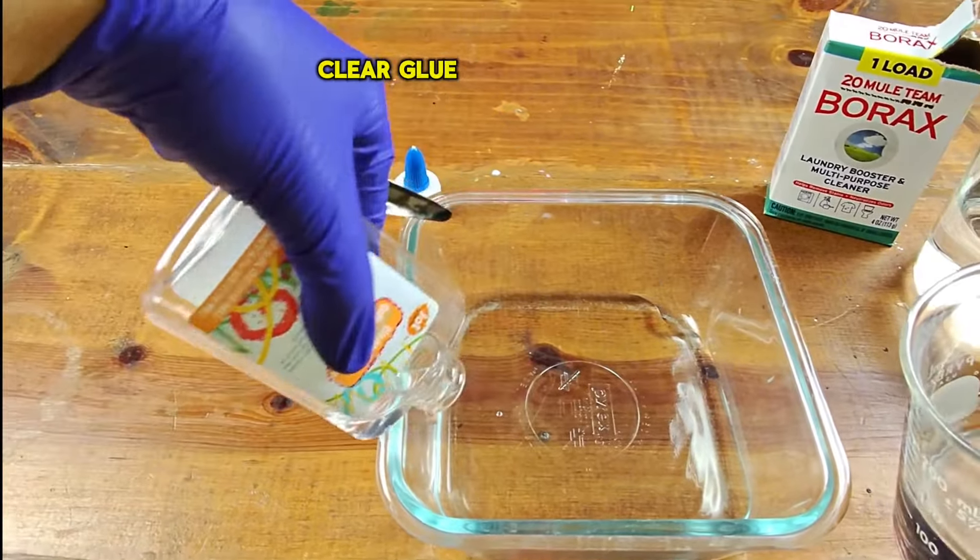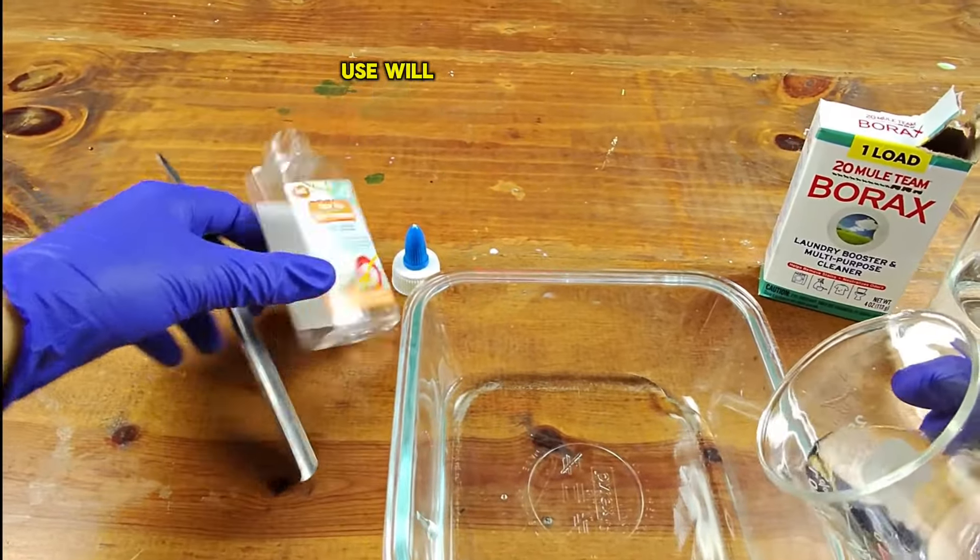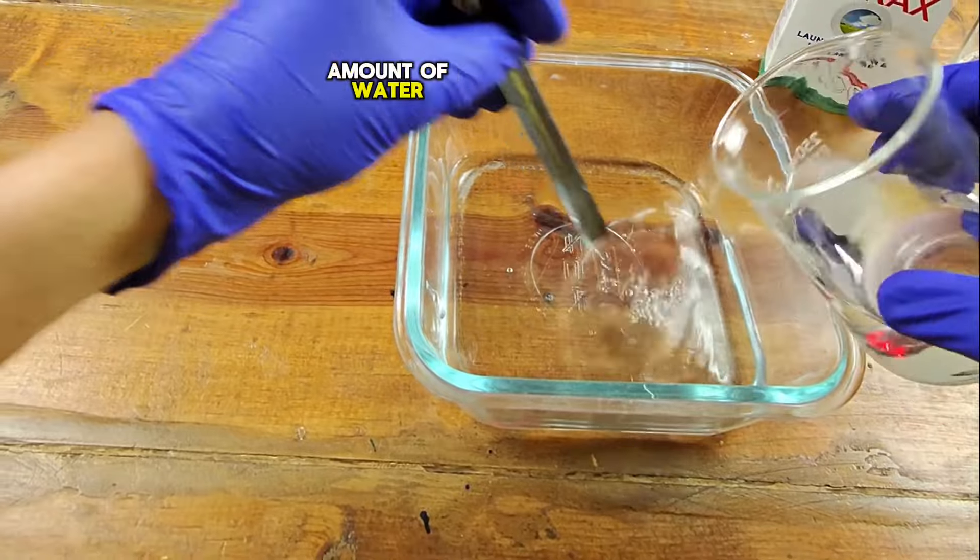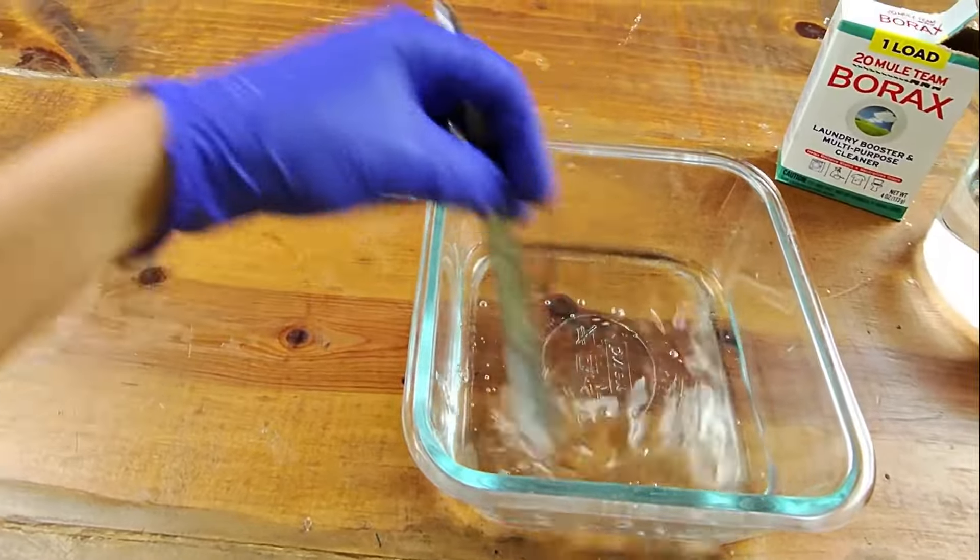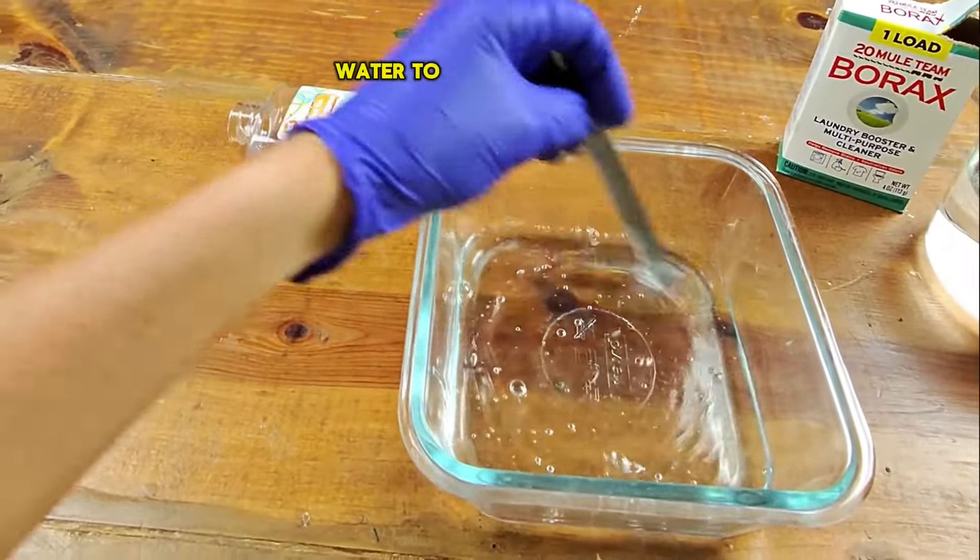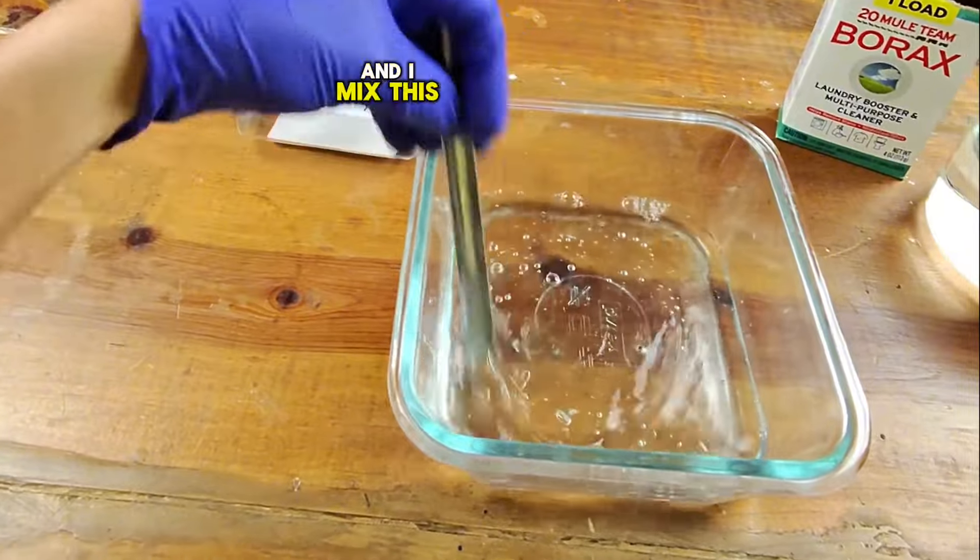So the amount of clear glue that I use will be proportioned to half the amount of water. So I only use half the amount of water to glue combination and I mix this really well.